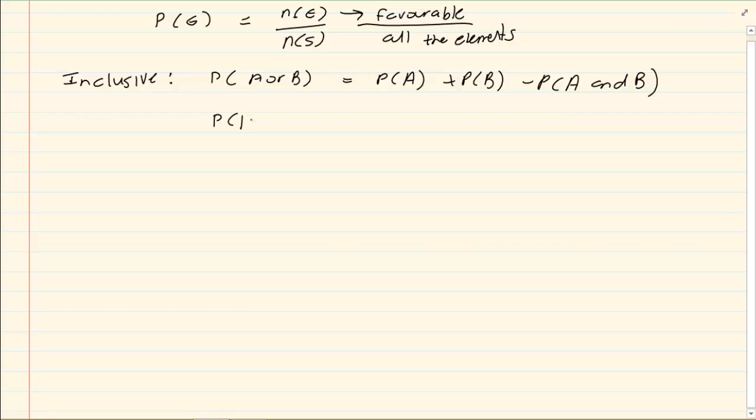When P of A and B is equal to 0, then we are going to call this mutually exclusive, which means that the two graphs, if you take the two events, they do not touch.